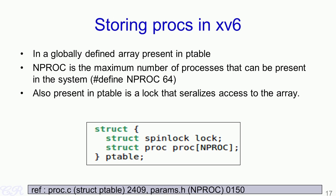How are these various PCBs stored in xv6? In xv6, a structure known as p table is defined. This structure has an array of struct procs — remember that struct proc is actually the PCB structure in xv6. The array has nproc entries where nproc is defined as 64. Each process that gets created in xv6 will have an entry in this particular array. You can find more information by looking at the xv6 code proc.c and the structure p table. Also, params.h is a file in xv6 which defines what nproc is.